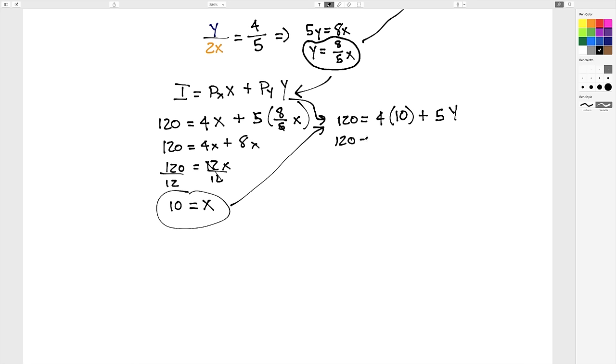So, 120 equals 40 plus 5Y, you take away 40 from both sides, and you get 80 equals 5Y, divide both sides by 5 to isolate Y, and you get that 16 equals Y.